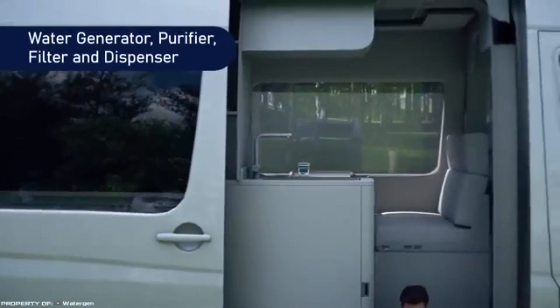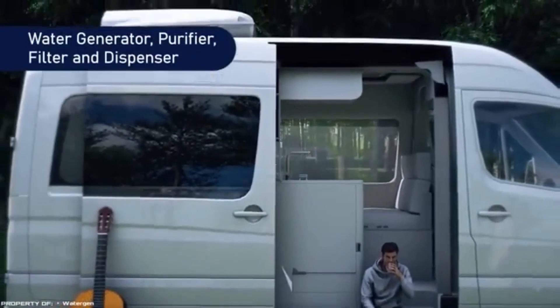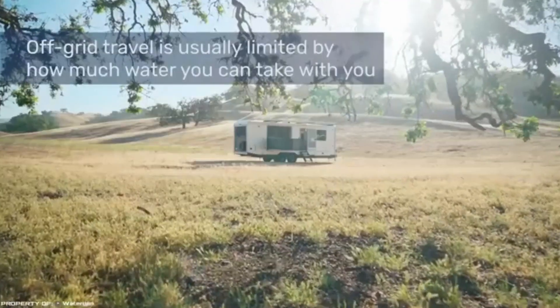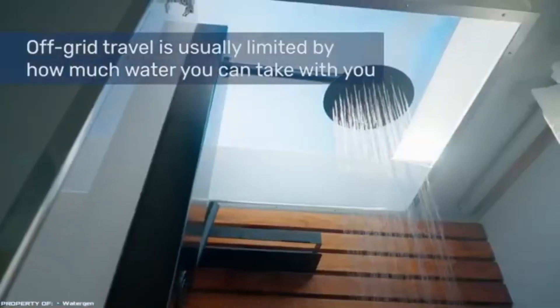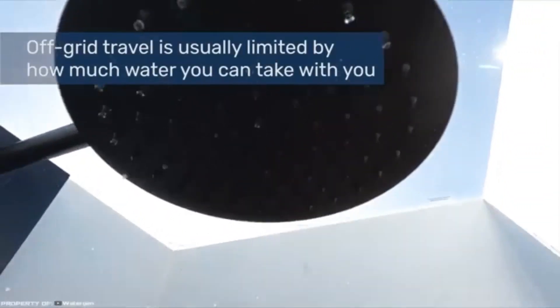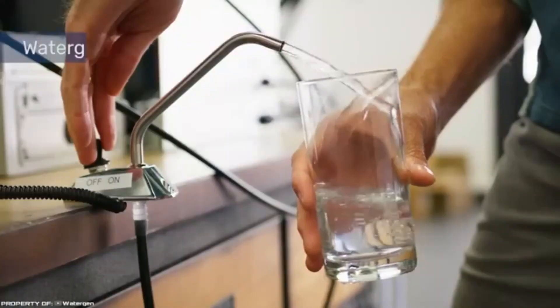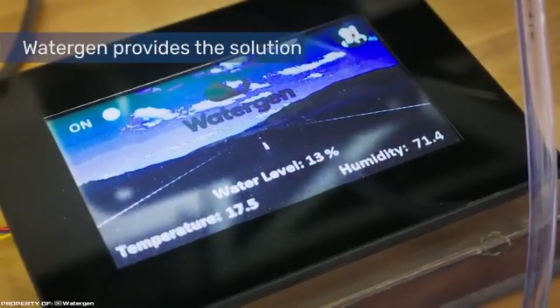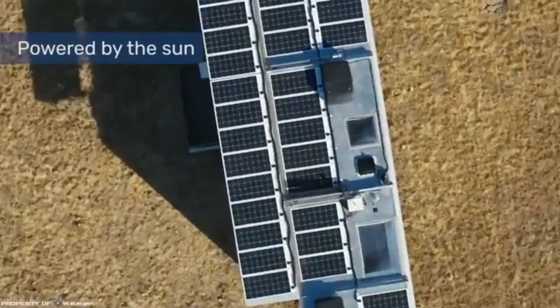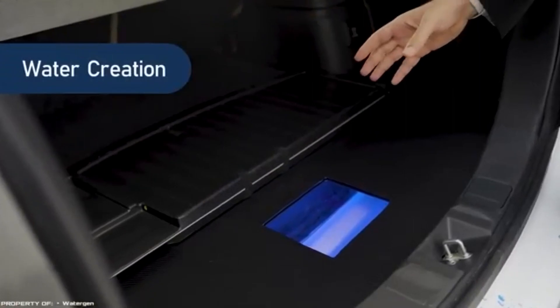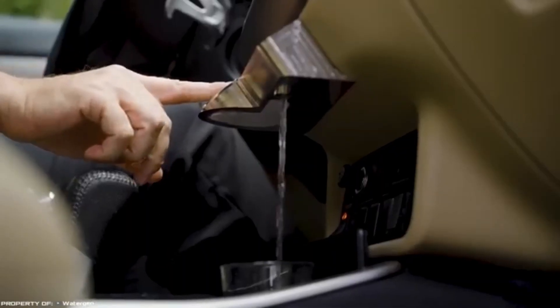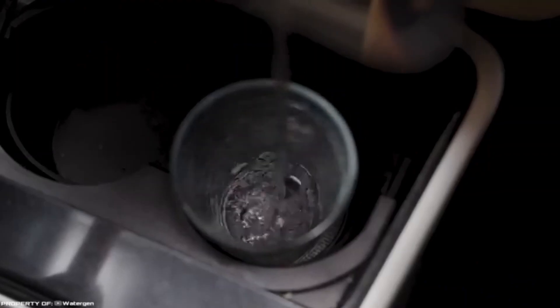The device works from a 12-volt car socket or a standard 220-volt socket. The company Living Vehicle went even further and developed a highly autonomous camper that is capable of providing its inhabitants with both electricity and drinking water. The equipment for generating water from the atmosphere and other electronic devices of the trailer work from solar panels. The water production capacity of the unit is about five gallons a day, which is enough to feel comfortable even during a long journey.